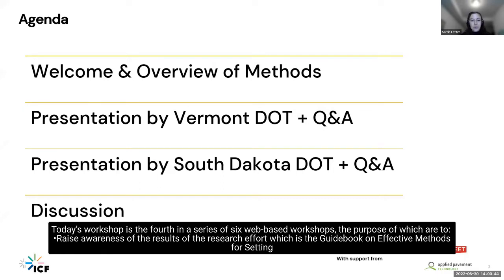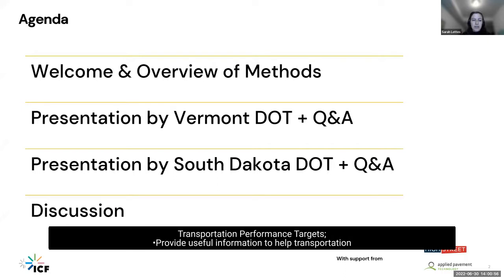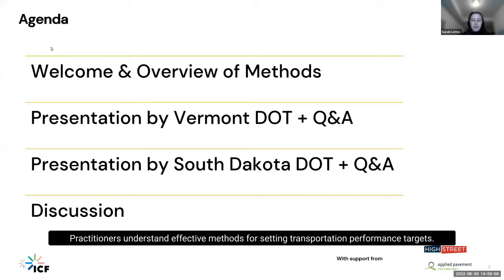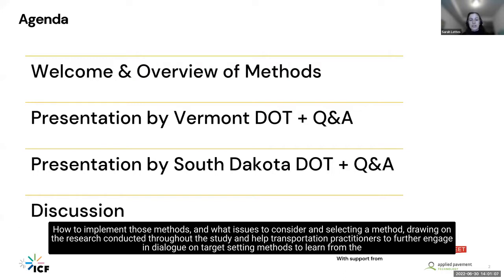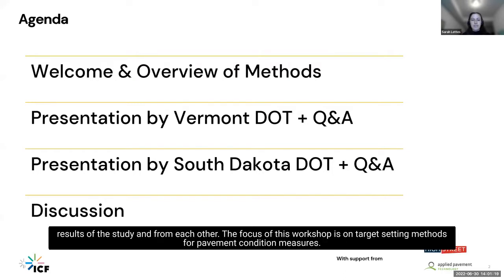Today's workshop is the fourth in a series of six web-based workshops. The purpose is to raise awareness of the research effort — a guidebook on effective methods for setting transportation performance targets — and to provide useful information to help transportation practitioners understand effective methods, how to implement those methods, and what issues to consider in selecting a method. The focus of this workshop is on target setting methods for pavement condition measures.